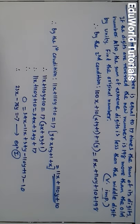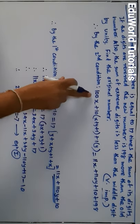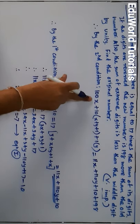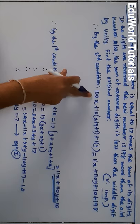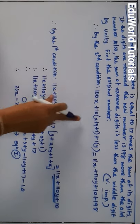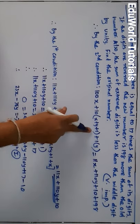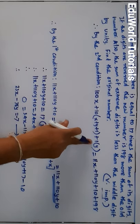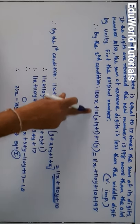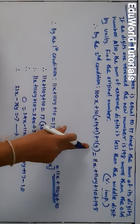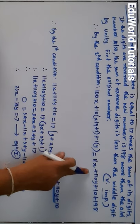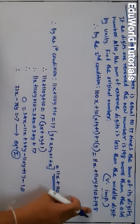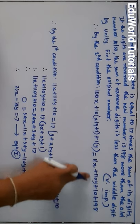Let us continue. 100x — because this x was in the units place earlier but now it will be in the hundreds place. The middle digit is the same: 10 into (x + y + 1). And y, which was in the hundreds place, will now come into the units place. So this will be the new number obtained by reversing the digits. This new number is equal to 198 more than the original number.